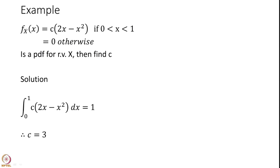Here is an example. Suppose f of x is a probability density function that takes the value C times (2x minus x squared) if x is between 0 and 1, and 0 otherwise. To find C, we use the property that the integral of the PDF over its complete range — here 0 to 1 — must equal 1. From simple algebra and arithmetic, you can show that C equals 3.